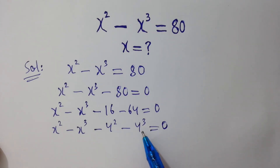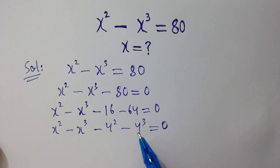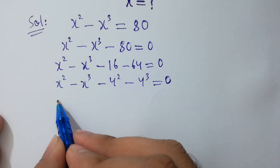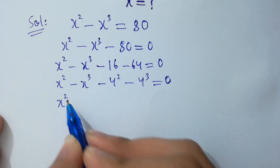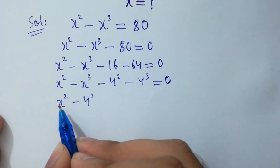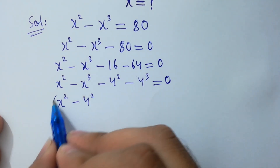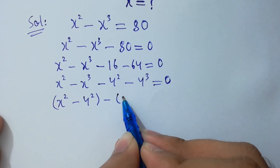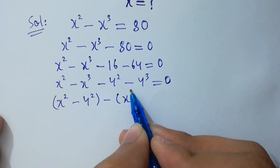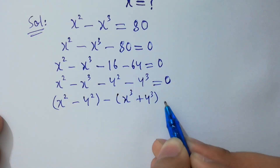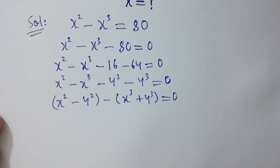4 times 4 times 4 equals 64. It will be equal to x squared minus 4 squared, minus common x cubed plus 4 cubed, equals 0.